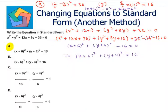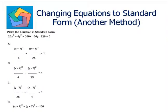Next problem: write the equation in standard form — negative 25x squared plus 4y squared plus 350x minus 56y minus 929 equals 0. Let us club the terms: minus 25x squared plus 350x plus 4y squared minus 56y minus 929 equals 0.